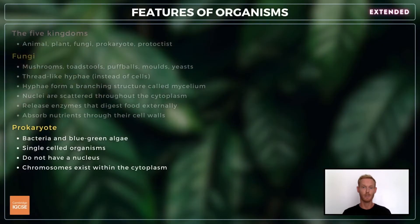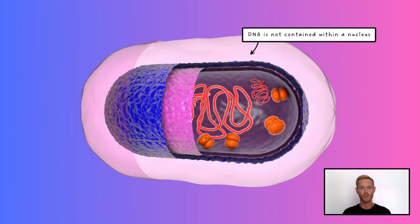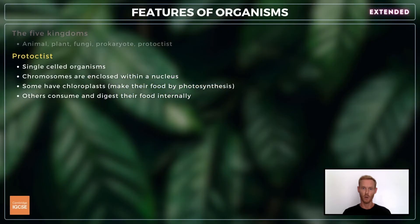The prokaryote kingdom is comprised of bacteria and blue-green algae. These organisms are single-celled, but they're distinct from other single-celled organisms because their chromosomes are not contained within a nucleus. We'll cover the features of bacteria in far more detail in topic 1.2.